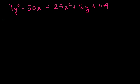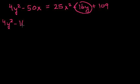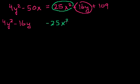On the left-hand side, I'll put the 4y squared. I'm also going to group all the x and y terms in this step. Let's move the 16y onto the left-hand side — if I subtract 16y from both sides, I get minus 16y on the left-hand side, and it disappears on the right. Then I subtract the 25x squared from both sides, so I get minus 25x squared minus 50x, and the 109 remains on the right-hand side.